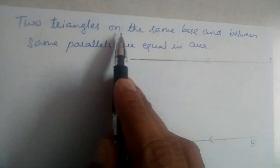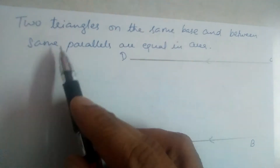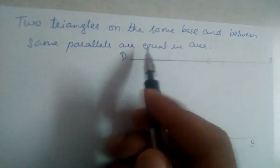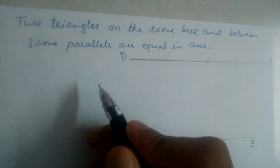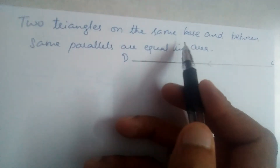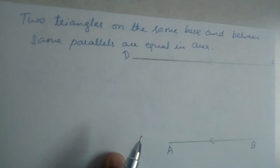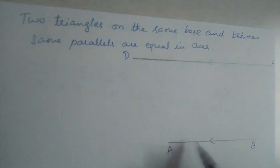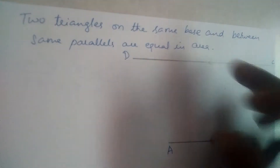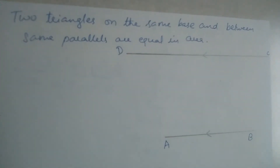Two triangles on the same base and between the same parallels are equal in area. We should prove this — it's a theorem. That means triangles between two parallel lines and with the same base should have equal area. Let us construct.